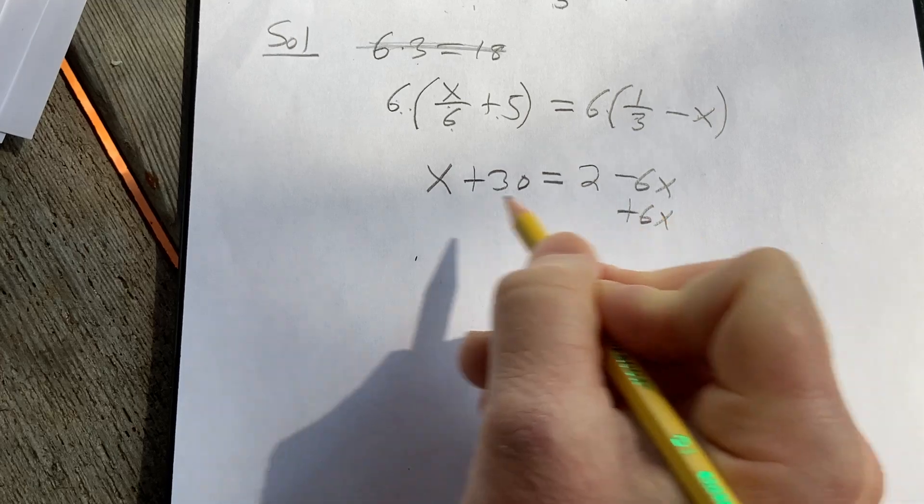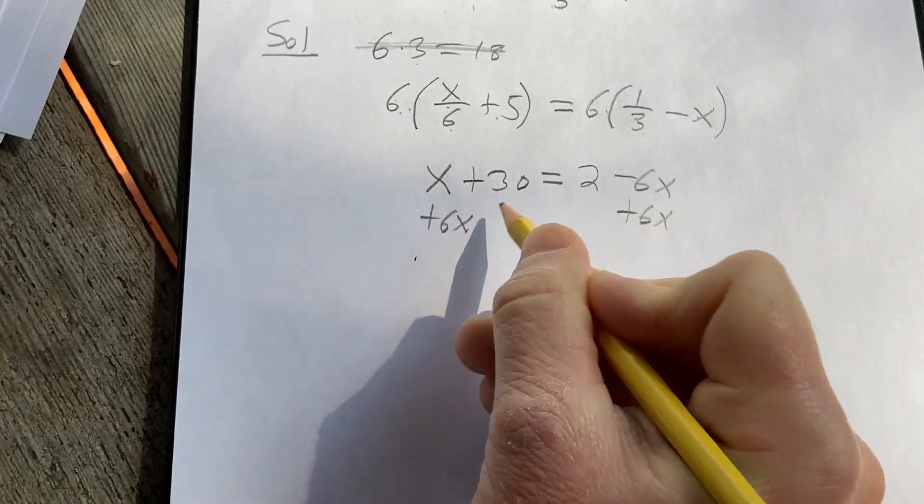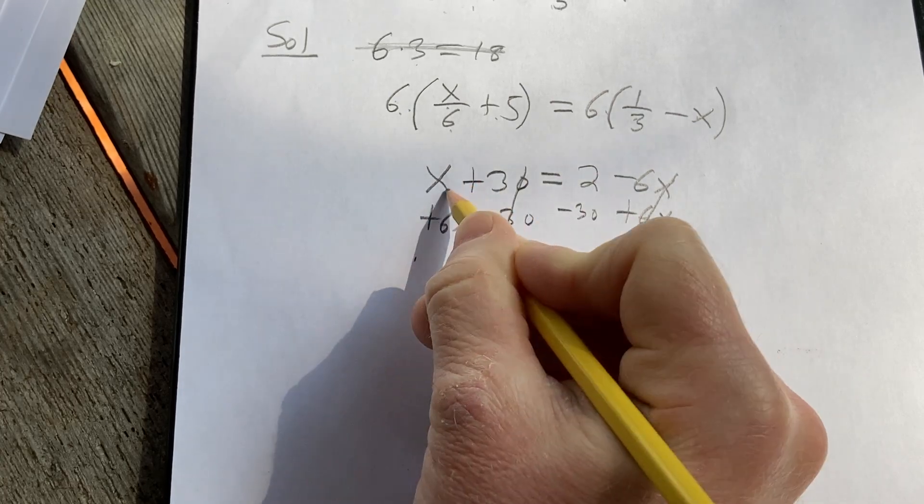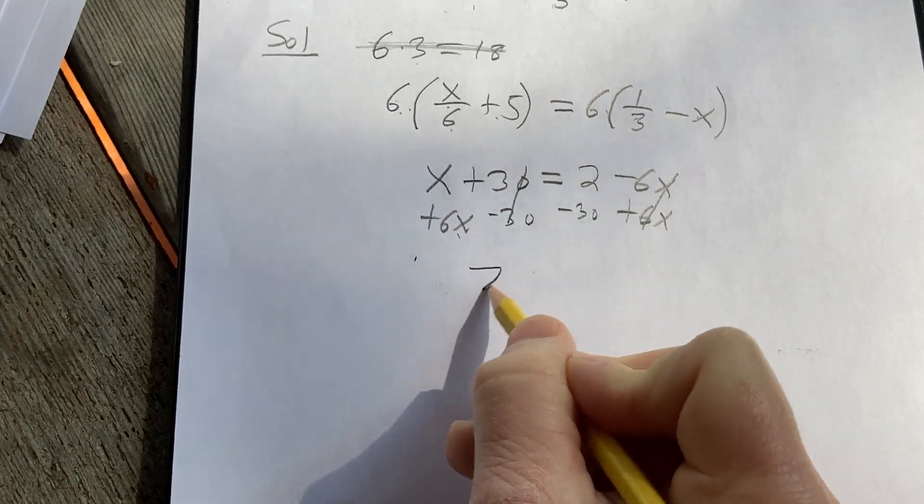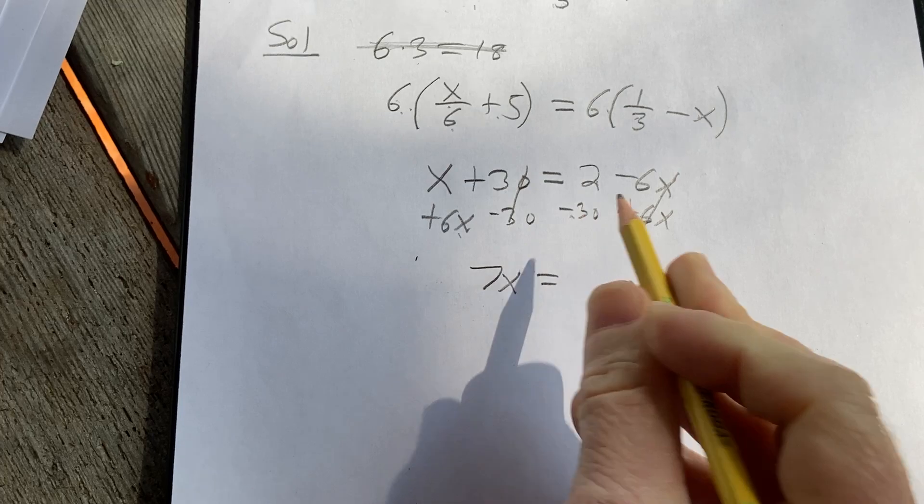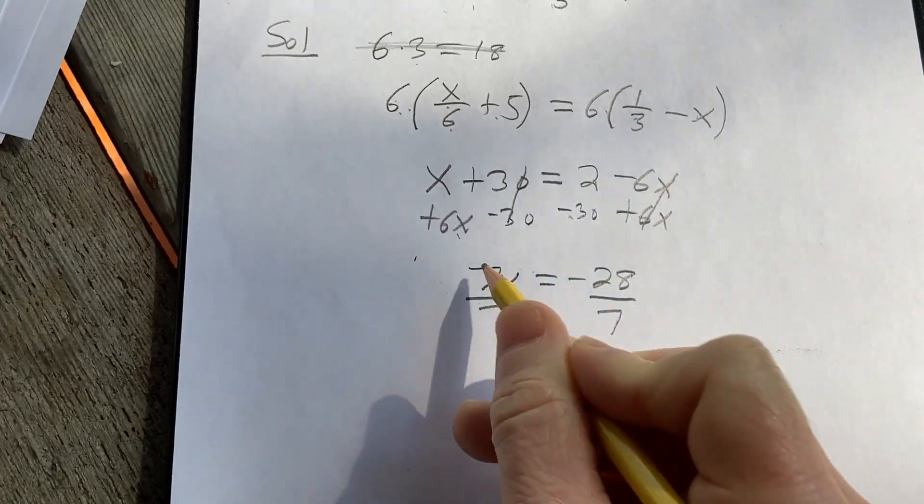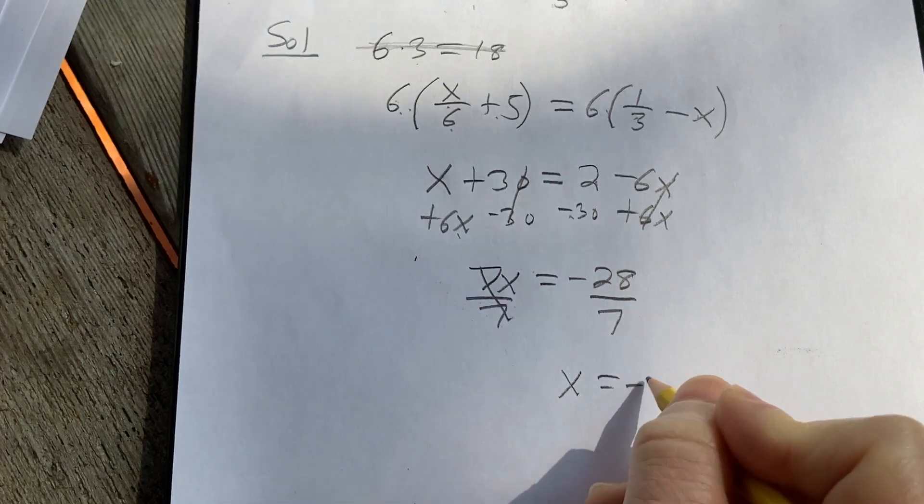Now we can add the 6x to both sides. Subtract 30 from both sides. x plus 6x is 7x. 2 minus 30 is negative 28. Divide by 7, divide by 7. x equals negative 4.